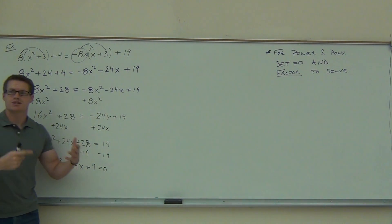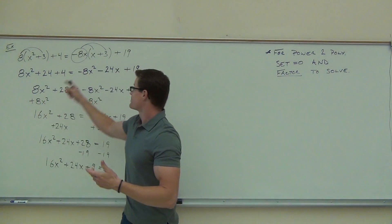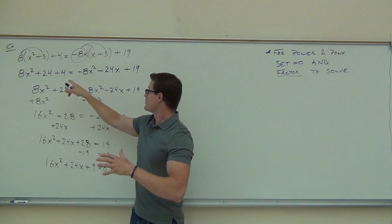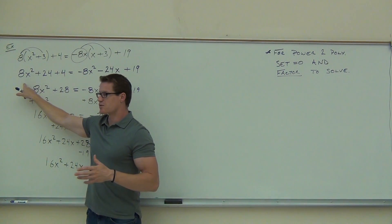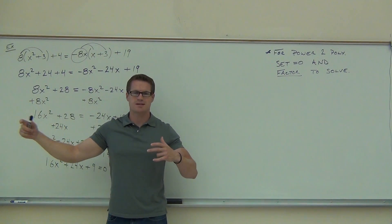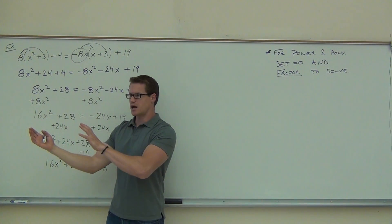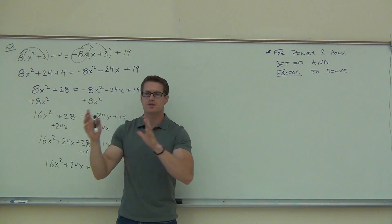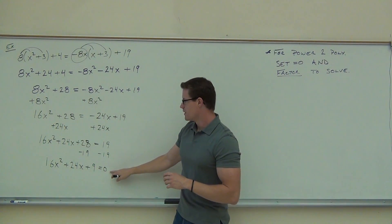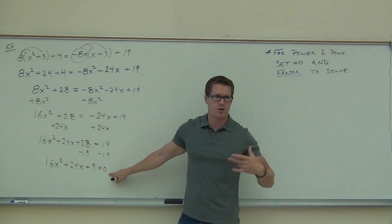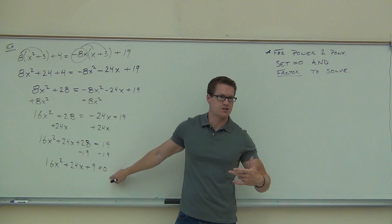So what clued us in on what to do on this problem? First, it wasn't simplified. You had to simplify. Second, we got down here and we saw some x squareds, right? Whenever you see that x squared that says, get everything to one side. After you combine like terms, get everything to one side. You've got to make sure that's a zero because the zero product property will work only if this is a zero.